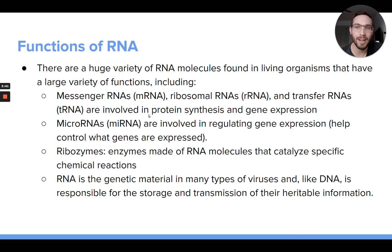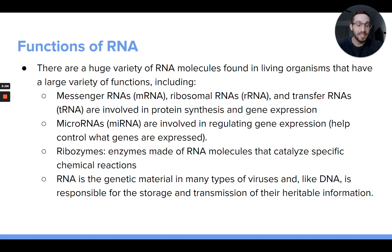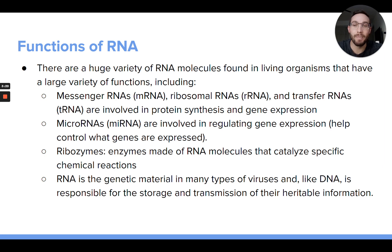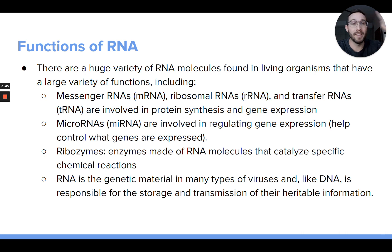RNA has a large variety of functions inside cells. One of the main functions involves protein synthesis — the process of putting together proteins made of amino acids, building and folding them into their correct three-dimensional shape to do important things in your cells. Three types of RNA are involved in protein synthesis: messenger RNA (mRNA), ribosomal RNA (rRNA), and transfer RNA (tRNA). We'll talk about all three more in the next set of notes.